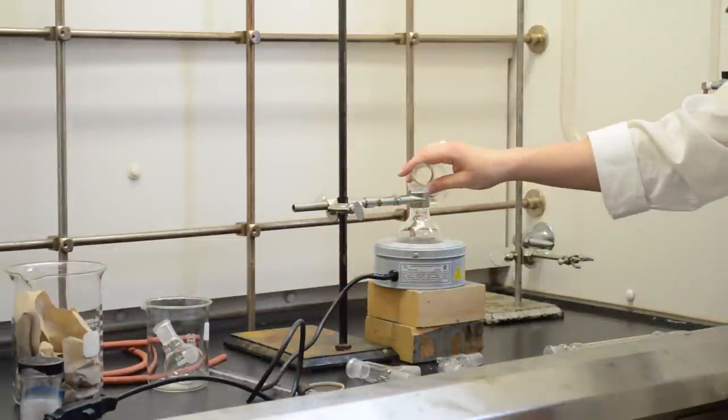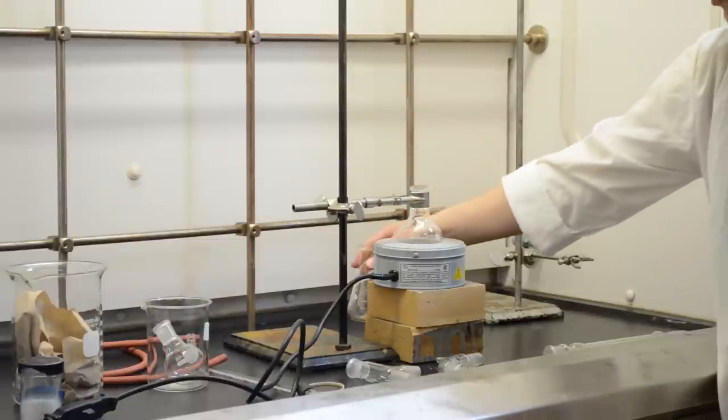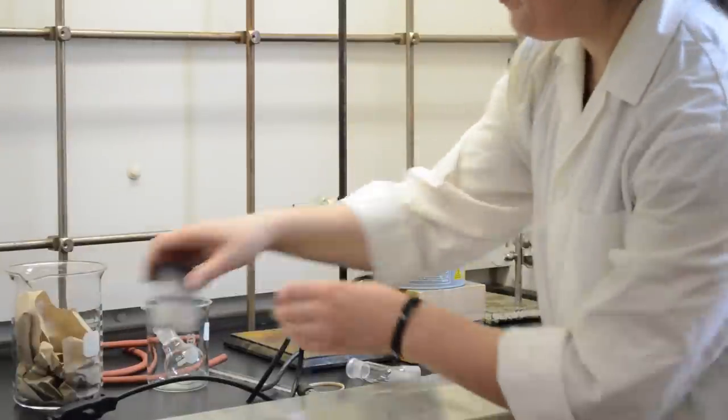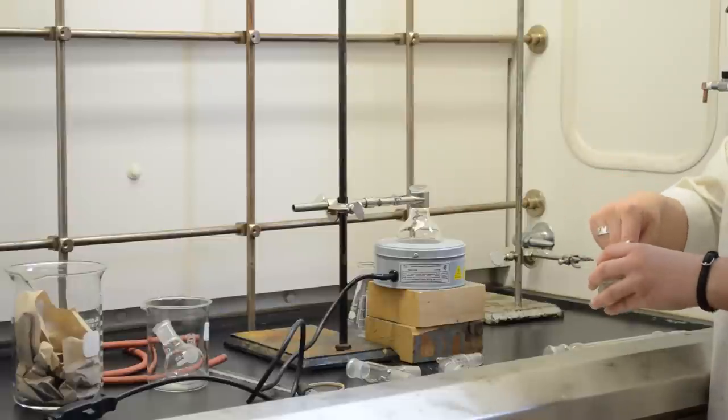Add your mixture of liquids with different boiling points. Choose a round bottom flask so that it's only half to two-thirds full, then add a boiling chip or two to prevent bubbling over.